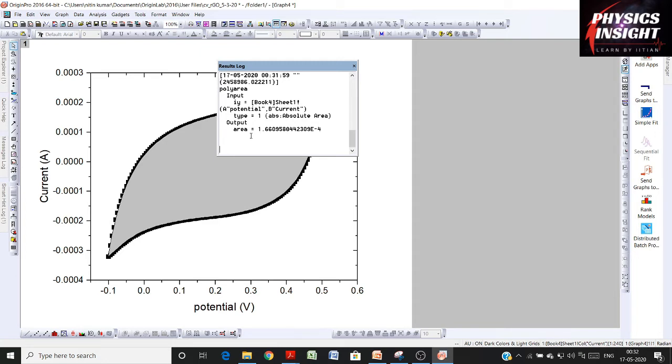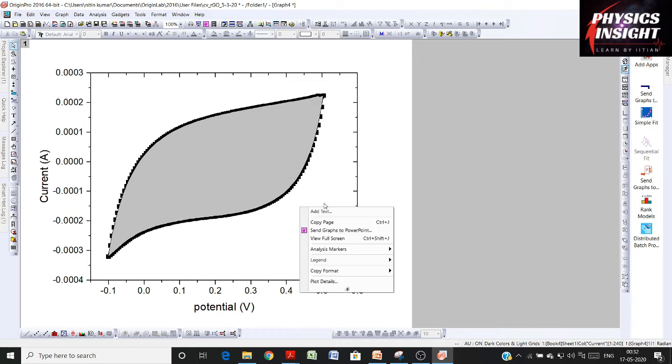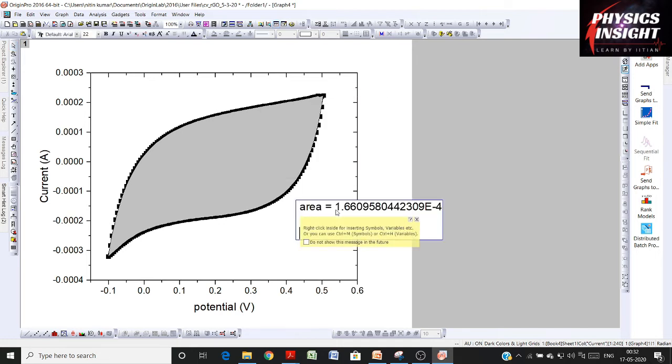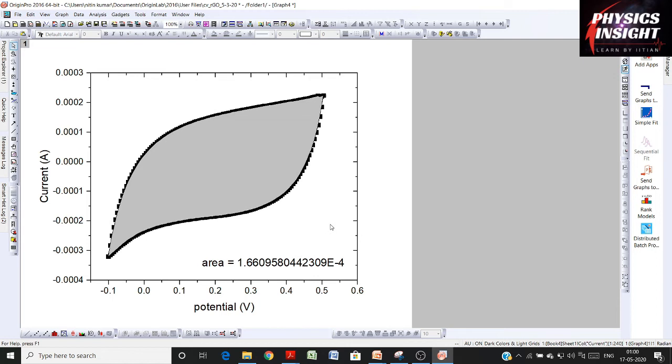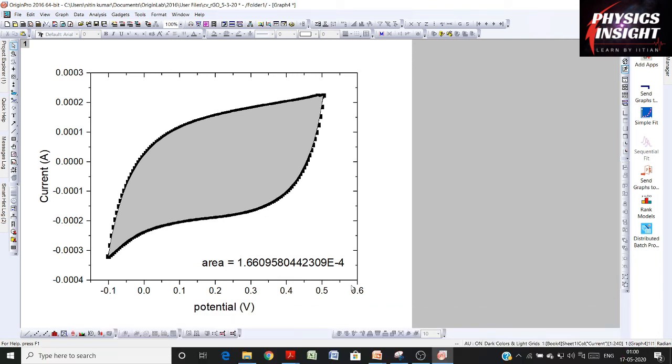Using this value of area in the expression, we can calculate the specific capacitance for our material. Let's copy this value and paste it here. In this plot, we also see that our potential window is from -0.1 volt to 0.5 volt, so our potential window (ΔV) is equal to 0.6 volt.